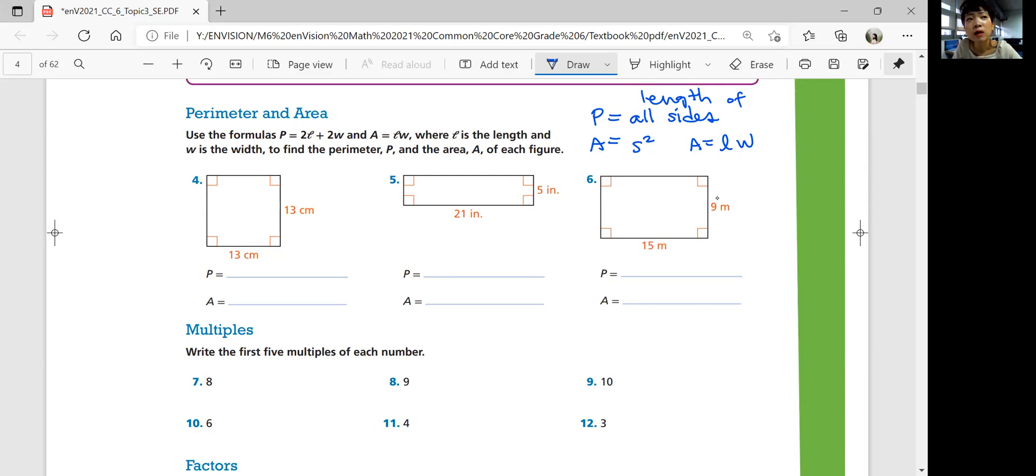The perimeter: you have 13, 13, 13, 13, four sides. So 13 times 4 equals 52 centimeters. Area: 13 times 13 equals 169 centimeters squared.